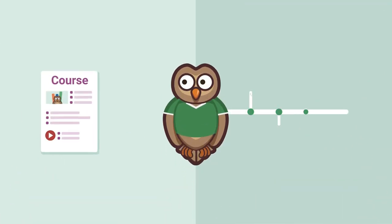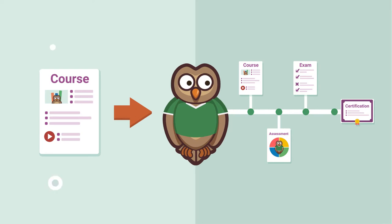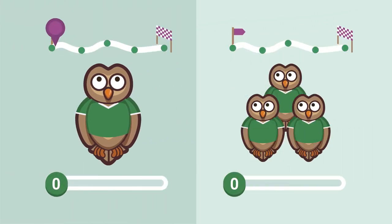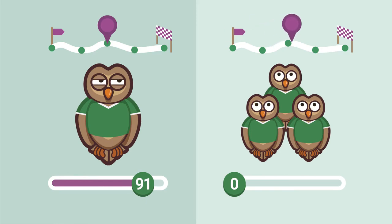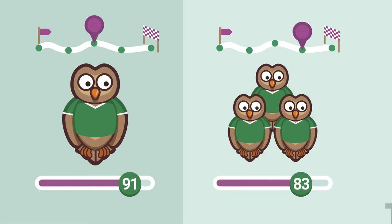Training material can be assigned one at a time or in a series known as a learning path. Once set up, you can track the progress of your employees and analyze their performance on an individual or group basis.